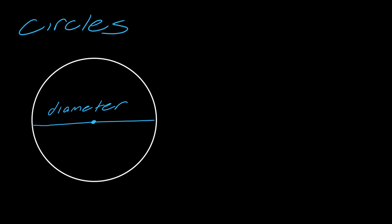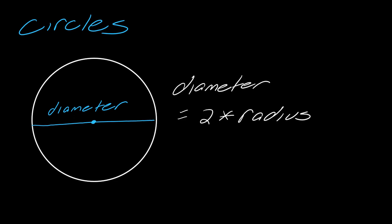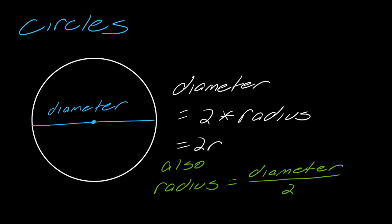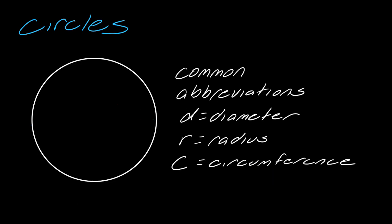There's a relationship between the radius and the diameter we should talk about. The diameter is always two times the radius, often abbreviated as 2r. The radius is the diameter divided by two, or r equals d divided by two. Common abbreviations: we use d for diameter, r for radius, and c for circumference.